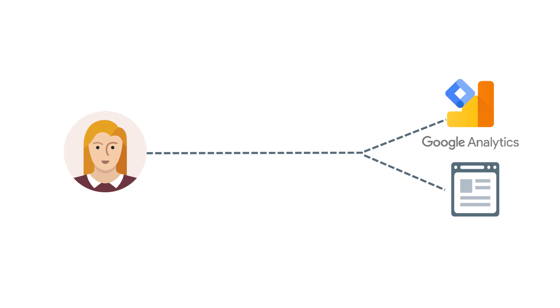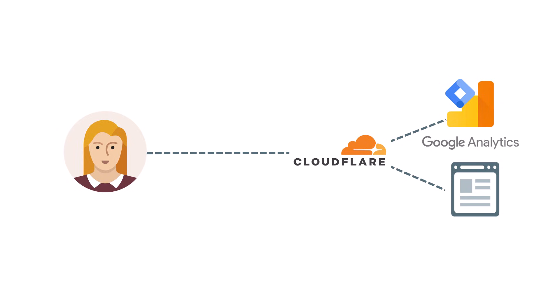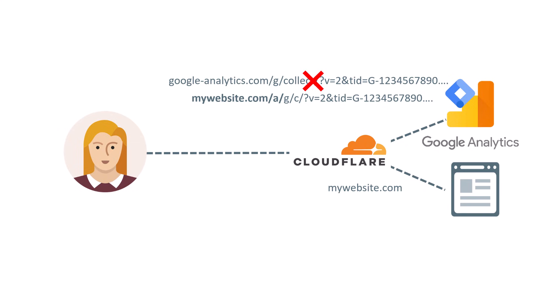So between your website and your website visitors, there would be an intermediary called Cloudflare. You could also use a different content delivery network — there are instructions in Google's documentation, I will post a link below the video. But the setup with Cloudflare is super simple and requires just several clicks. Let's say your website's URL is mywebsite.com. Instead of using googleanalytics.com/g/collect, with Google Tag Gateway your Google Analytics requests would be sent to your own domain, with a subfolder specifically designed for analytics or Google Tag Manager. So instead of having that URL which is often blocked, you would be sending data to your own domain, meaning these requests will have a much lower chance of getting blocked.